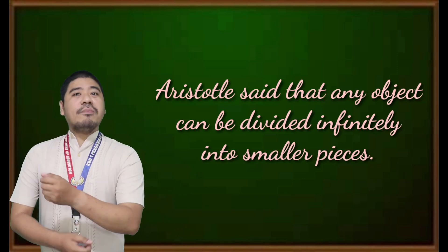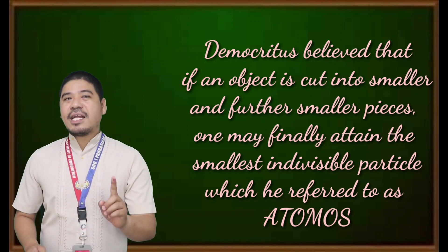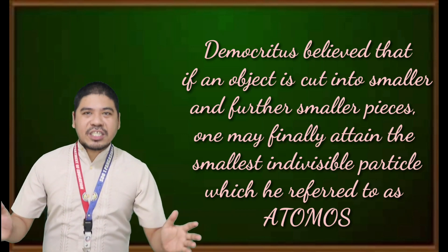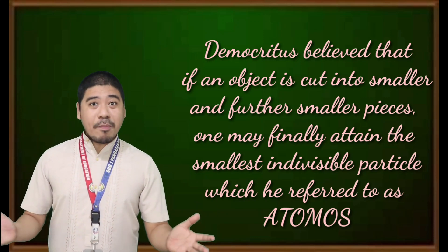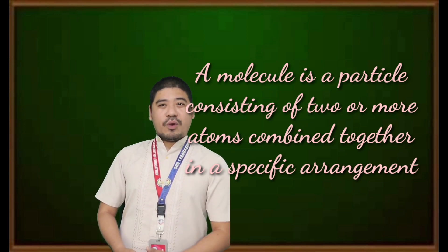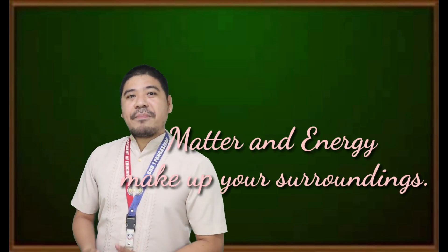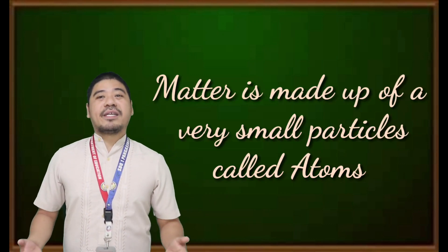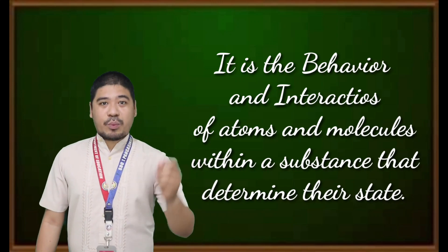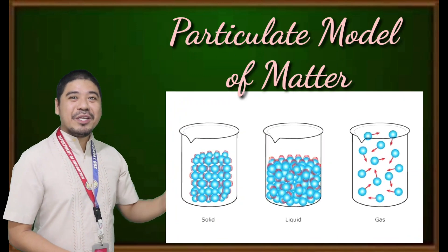According to Aristotle, a Greek philosopher, any object can be divided infinitely into smaller pieces. But Democritus believed that if an object is cut into smaller and further smaller pieces, one may finally attain the smallest indivisible particle, which is referred to as atomos, meaning indestructible. A molecule is a particle consisting of two or more atoms combined together in a specific arrangement. Matter is made up of very small particles called atoms. It is the behavior and interaction of atoms and molecules within a substance that determine their state. Please look at the picture of the particulate model of matter.